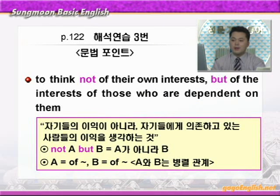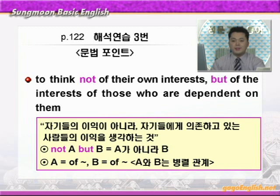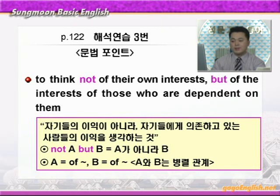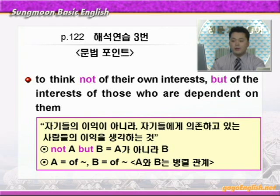다음으로 문법 포인트를 보겠습니다. 'To think not of their own interest but of the interest of those who are dependent on them' — 다시 말해 자기들의 이익이 아니라 자기들에게 의존하고 있는 사람들의 이익을 생각하는 것. 'not A but B' 하면 A가 아니라 B 이런 뜻이라고 했습니다. 여기서 보면 A에 'of 뭐뭐', B에도 'of 뭐뭐' 이런 형식으로 같은 형식이 나왔죠. 다시 말해 A와 B가 병렬관계라는 얘기입니다.